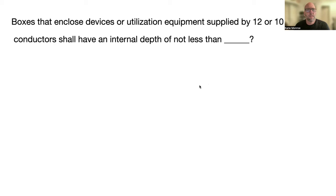Boxes that enclose devices or utilization equipment supplied by 12 or 10 AWG conductors shall have an internal depth not less than one and three sixteenths inches, 314-24-B-4.